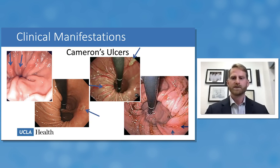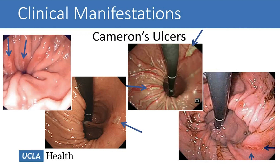The third category of clinical manifestations is Cameron's ulcers and Cameron's erosions. These occur due to pressure-caused ischemia at the pinch of the diaphragm where the stomach travels through the esophageal hiatus. They are associated with larger hernias, as more gastric mucosa is bunched at that area with pressure exerted on it. As blood flow decreases over time, the mucosa breaks down forming commonly linear erosions at this level, shown with blue arrows in this slide.